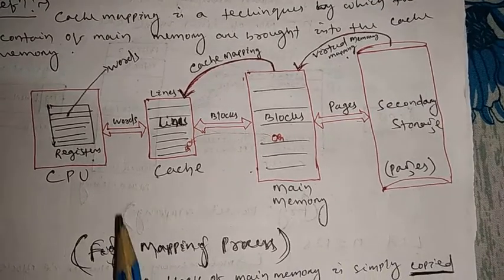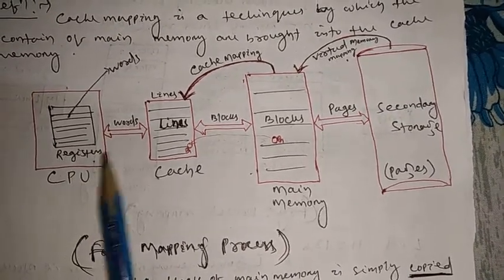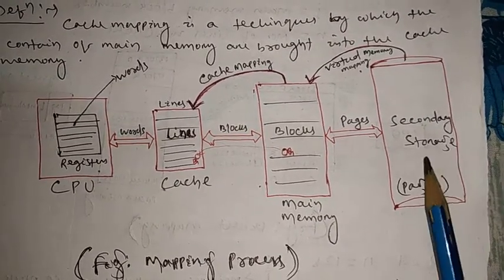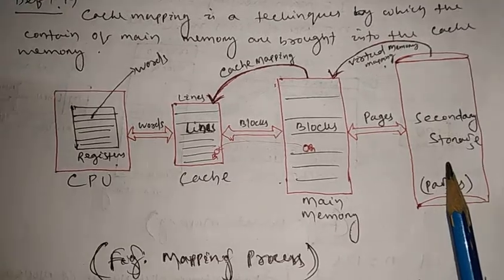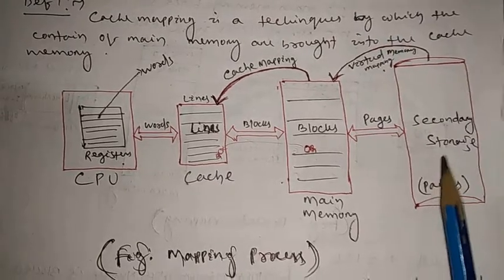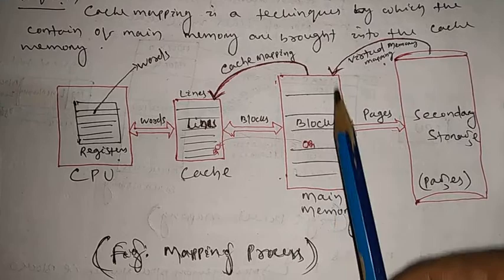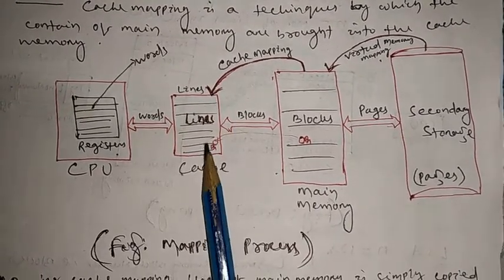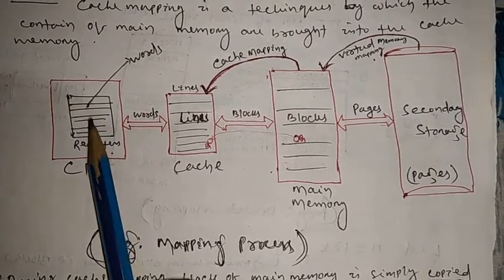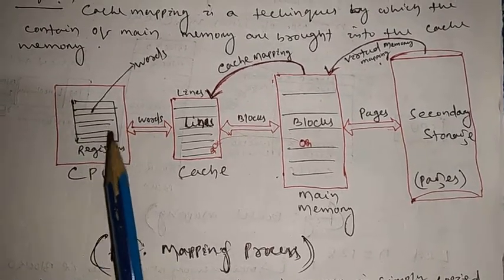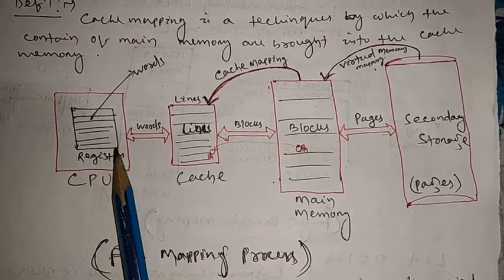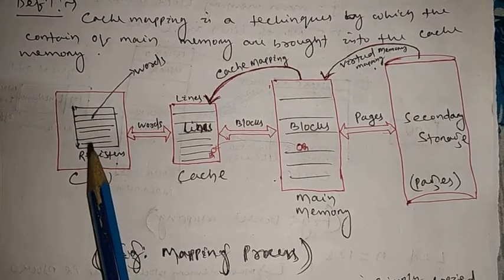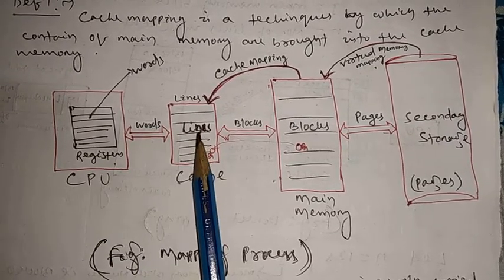Let me draw a diagram. This is the CPU, this is the cache, this is the main memory, and this is the secondary storage device. In secondary storage, data is stored in pages or files. In main memory, data is stored in blocks. In cache memory, data is stored in lines, and in registers, data is stored in words.